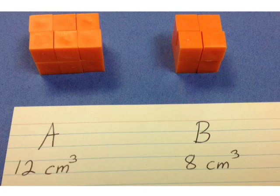This is Module 5, Lesson 6. Find the total volume of solid figures composed of two non-overlapping rectangular prisms.